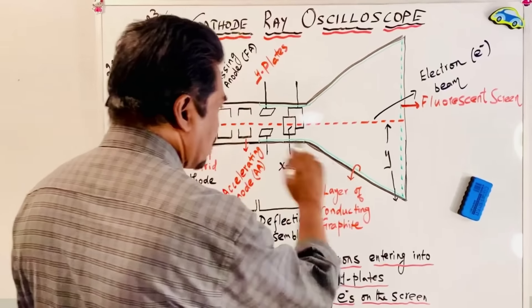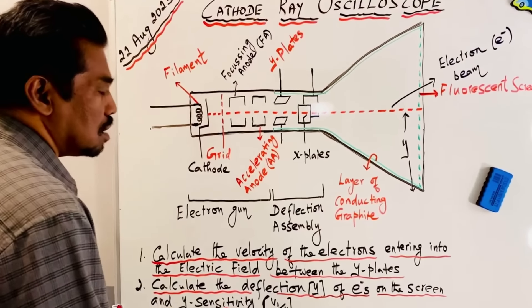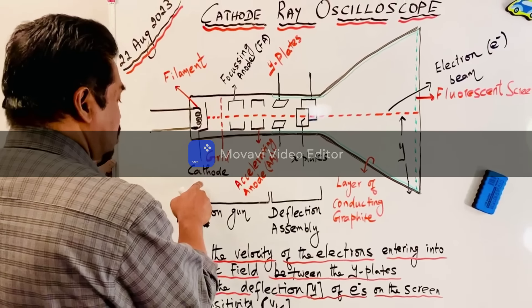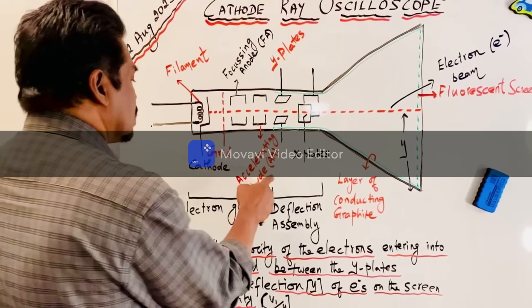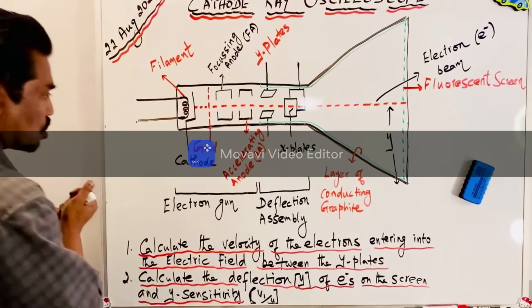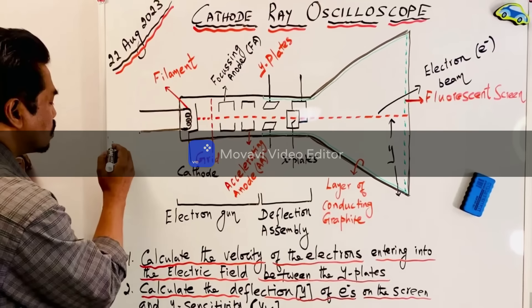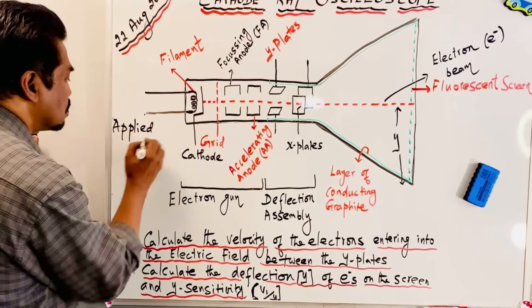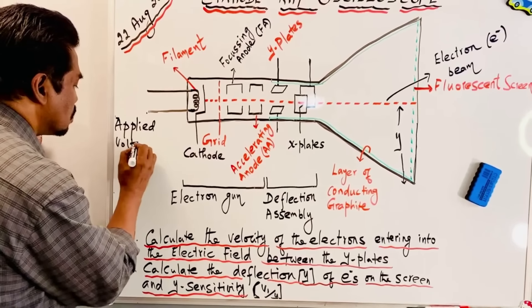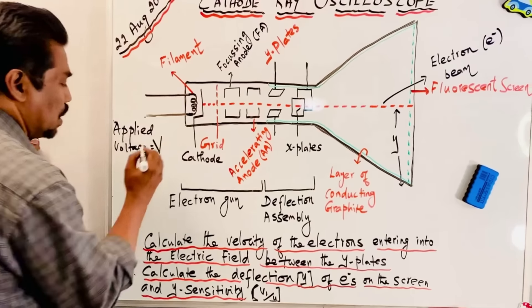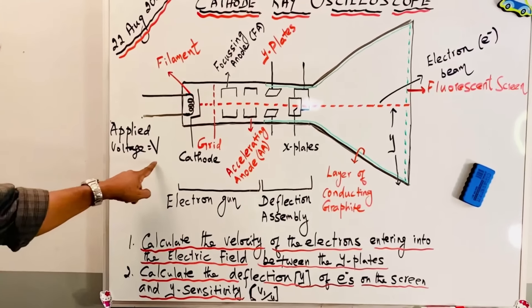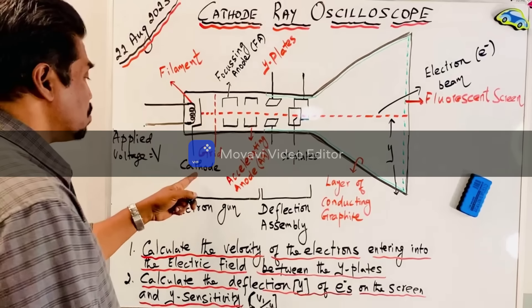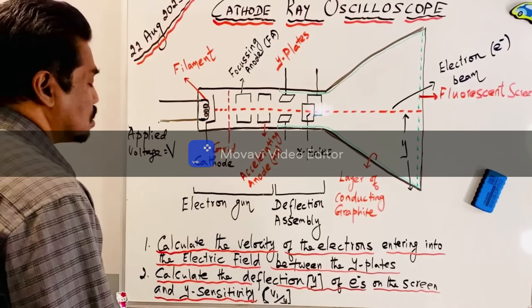The graphite coating on the screen will allow smooth conduction for the electrons. First of all, we apply a voltage between the cathode and the accelerating anode — this is called the applied voltage, and we consider it as V volts. It should always be cathode-positive.